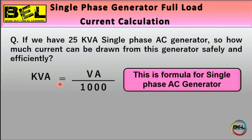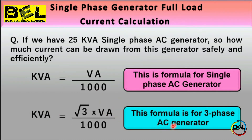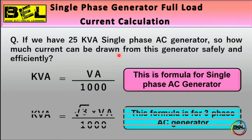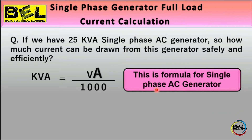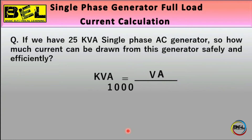There is a formula to find the maximum safe current. For a single phase AC generator: kVA = VA / 1000. For a three phase AC generator, an additional factor of root 3 is included in the formula. A link is available for the three phase calculation. For our single phase case, we need to find amperes (A), so we rearrange the formula.